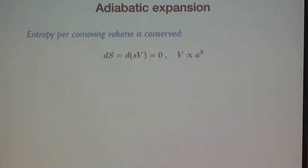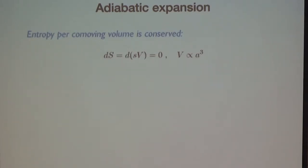Let's understand the consequences of this expansion. Because the universe expands, when I go backwards in time the universe was smaller, so I expect the density was higher and it was hotter. In the very early universe there was a plasma of particles, and because the interaction time between these particles was much shorter than the expansion time, you quickly achieved a state of thermal equilibrium with maximum entropy.